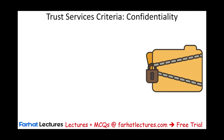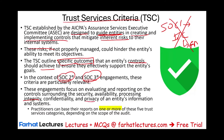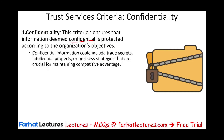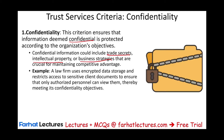There are five trust services criteria, and we're going to look at each separately. Starting with confidentiality: this criterion ensures that information deemed confidential is protected according to the organization's objective. Only appropriate people should see this information. Confidential information could include trade secrets, intellectual property, and business strategies important for maintaining competitive edge. For example, a law firm uses encrypted data storage and restricts access to sensitive client documents to ensure only authorized personnel can view them, thereby meeting its confidentiality objective.